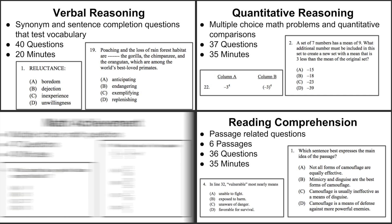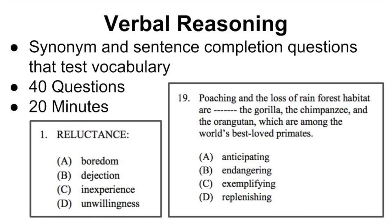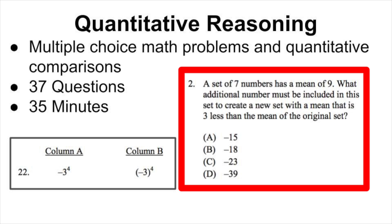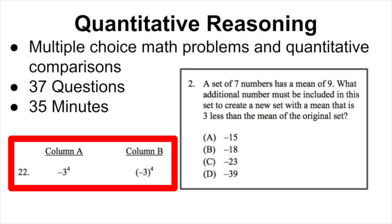The middle level ISEE covers four areas: verbal reasoning, quantitative reasoning, reading comprehension, and math achievement. The verbal reasoning section assesses vocabulary and understanding how to use words in context, with analogy-type questions as well as sentence completion questions. The quantitative reasoning section is all about math — multiple choice questions as well as quantitative comparison questions where you look at values in column A and column B and decide whether one is larger than the other, they're equal, or there's not enough information to make a decision.